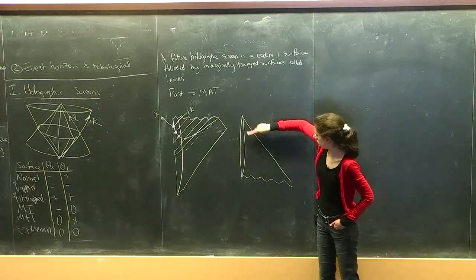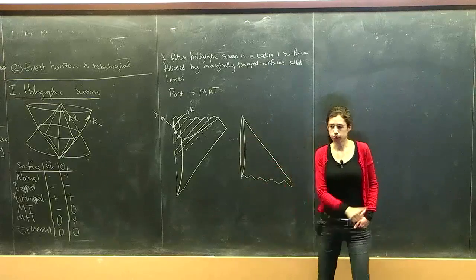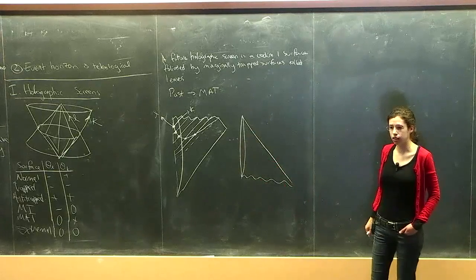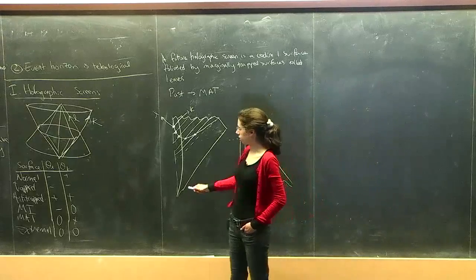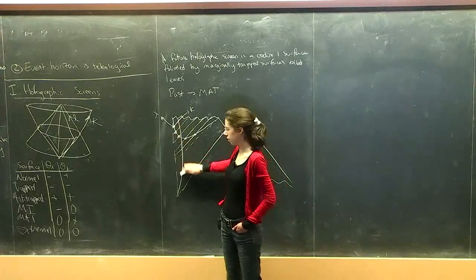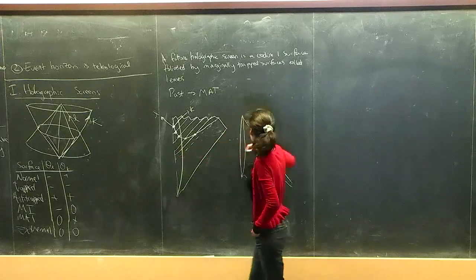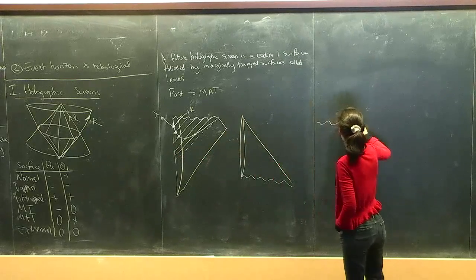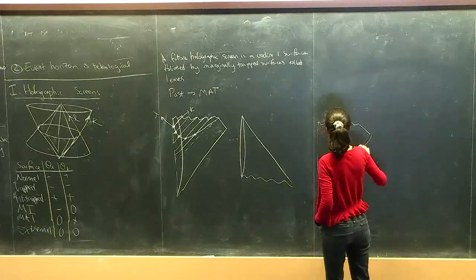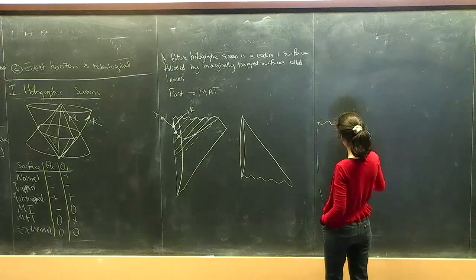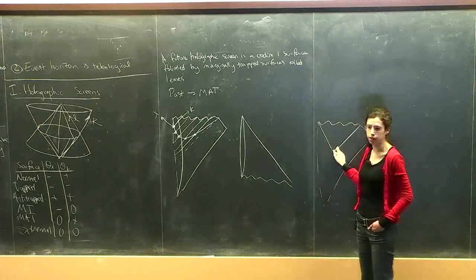The construction starts with a null foliation of the spacetime. You travel along each null slice until you reach a marginally trapped surface, and take the union of those surfaces. At each intersection with the holographic screen, that intersection is a marginally trapped surface. In this picture the K-direction and L-direction are indicated. For a null shell (like a Vaidya-type collapse), the screen would look strictly null.